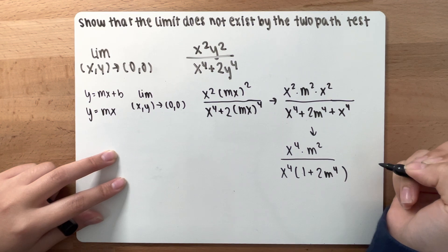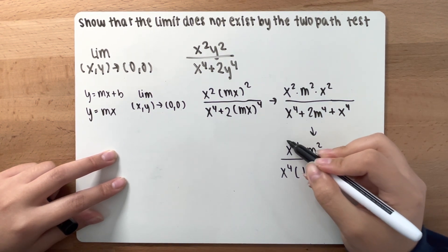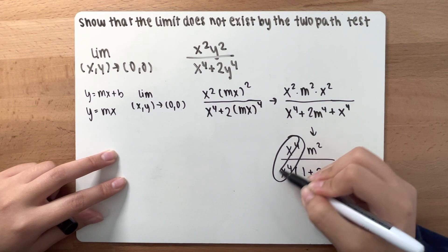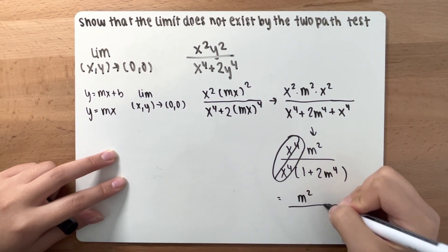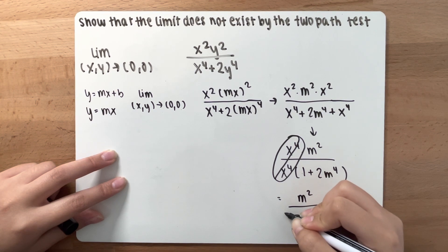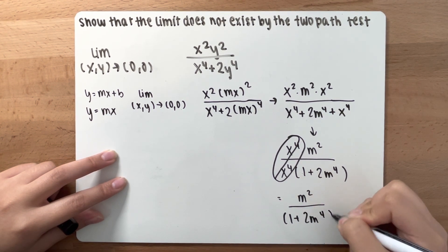Okay, and now, we can cancel out x to the fourth power. We are left with m squared over 1 plus 2m to the fourth power.